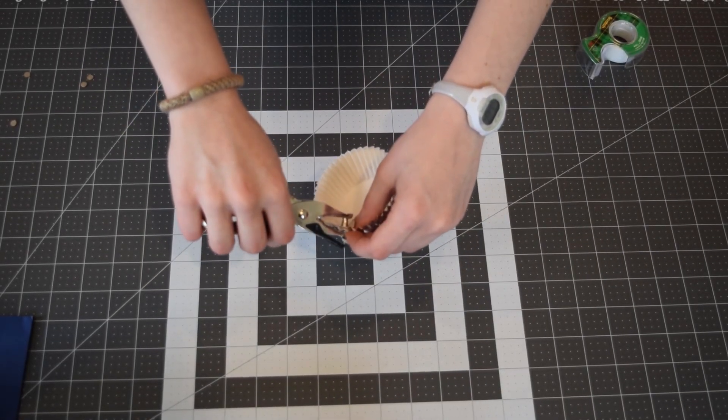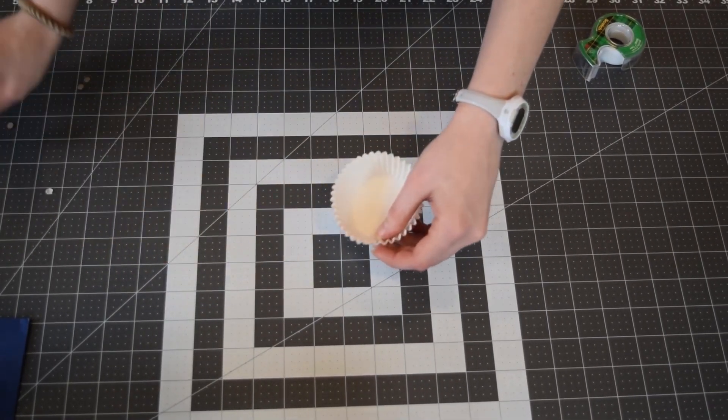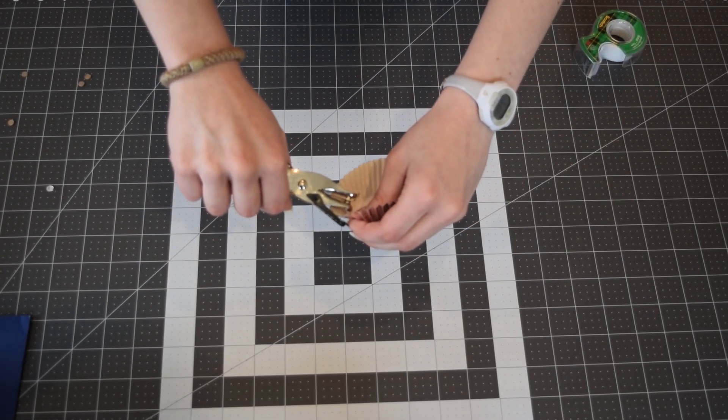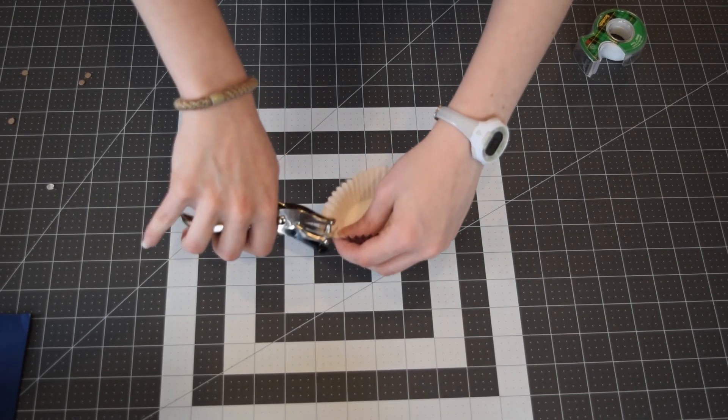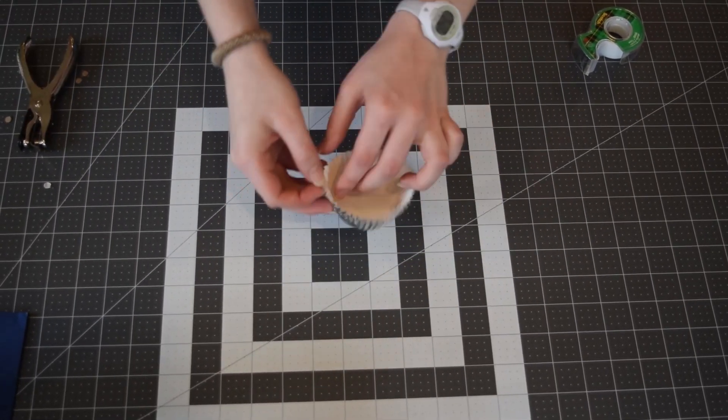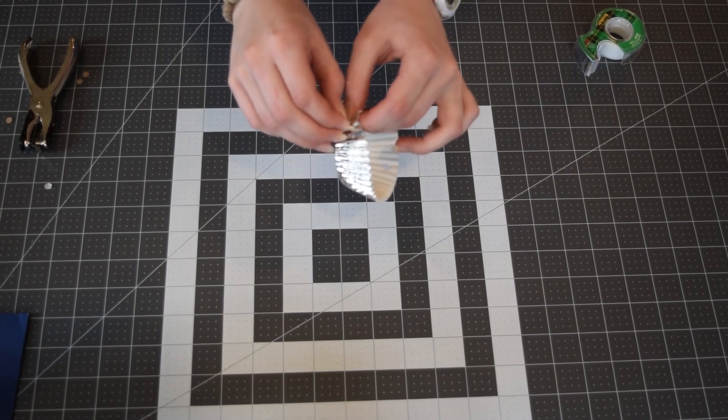Now, we're going to make the bucket. Use your hole puncher, or get an adult to help you poke holes with scissors in each side of whatever cup you're using. I'm using a muffin tin, so I used a hole puncher on either side of my muffin tin.